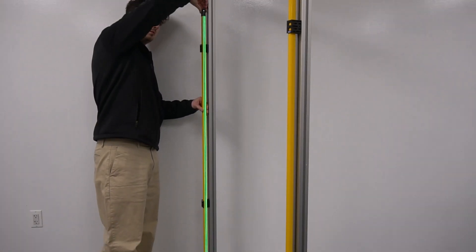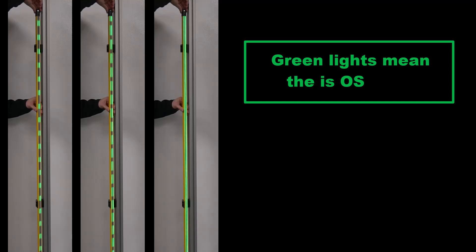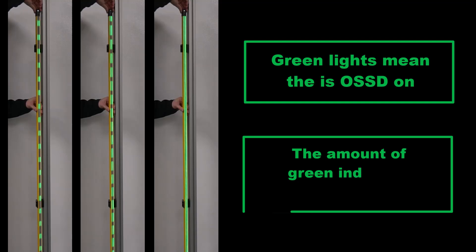And once your curtains are operating at full intensity, you'll see the full length of the indicator turn a solid green, which means that you are aligned properly. Please note that as long as there is any green on the indicator of the curtain, the safety output is going to be on. The different levels or the different amounts of green just indicate how well aligned the curtain is.